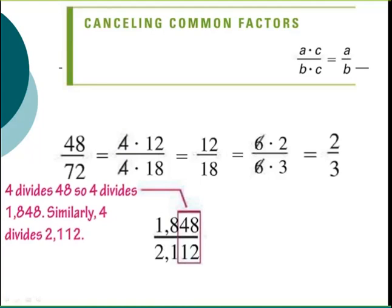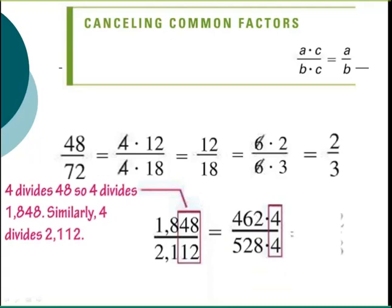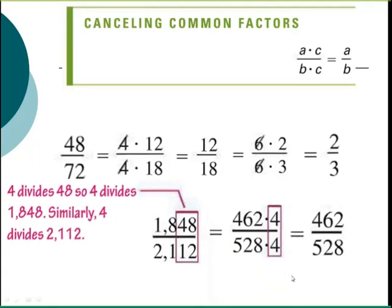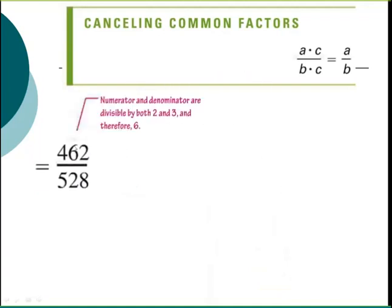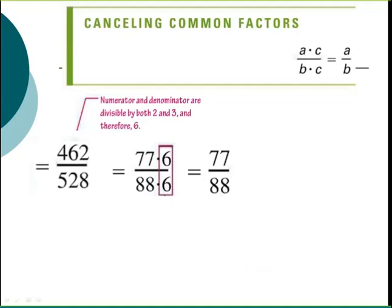For the larger example with 1848 and 2112: both are divisible by 4, so divide by 4 first. Then check divisibility rules — these are divisible by 6 (both 2 and 3), so dividing by 6 reduces further. After canceling the 6, I have 77/88, and that reduces by 11 to give 7/8 as the final reduced fraction.